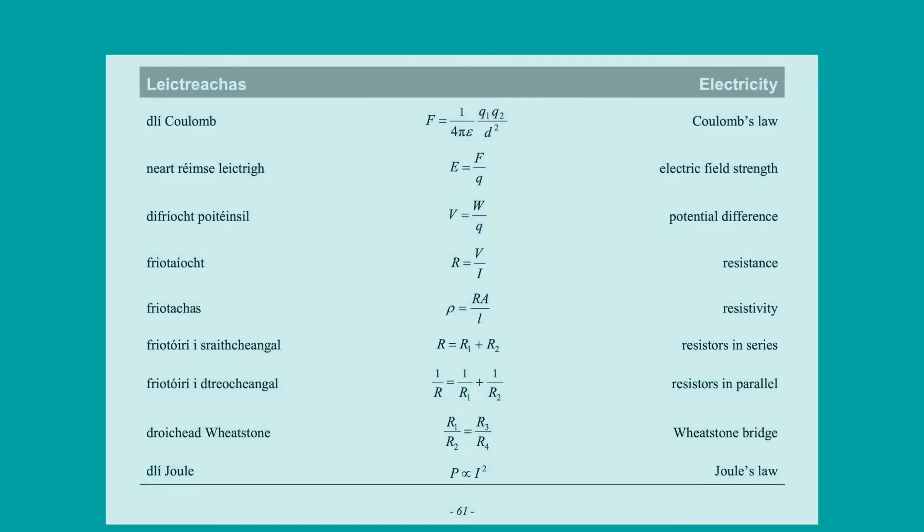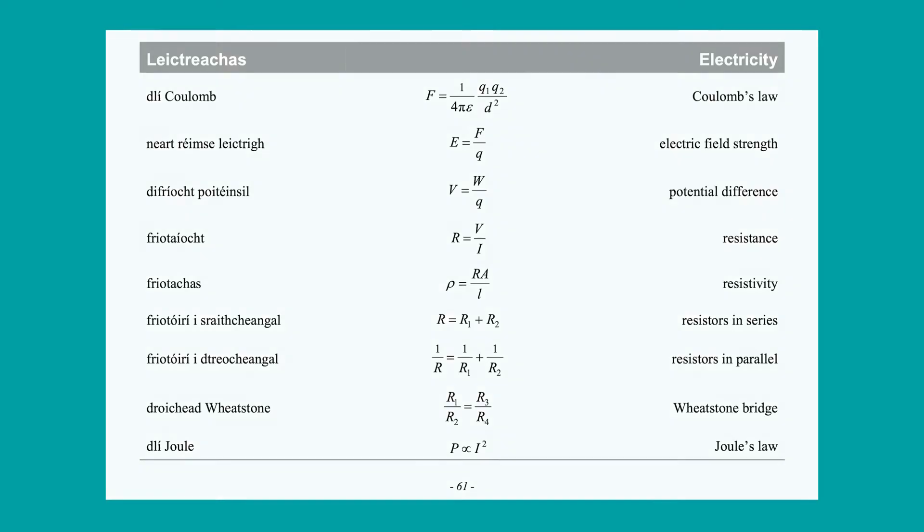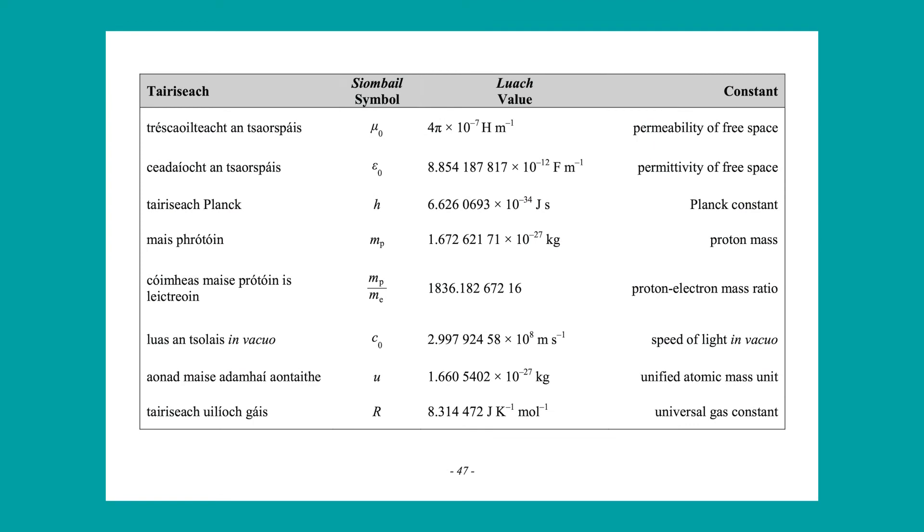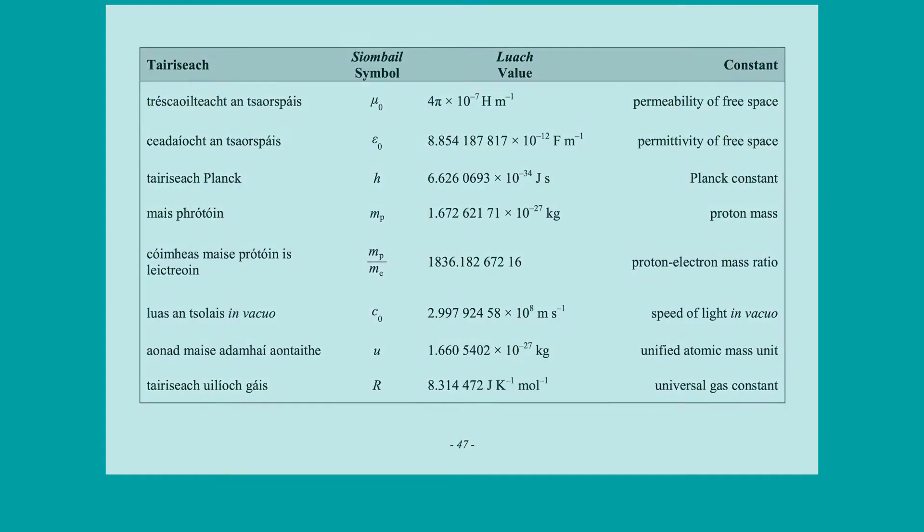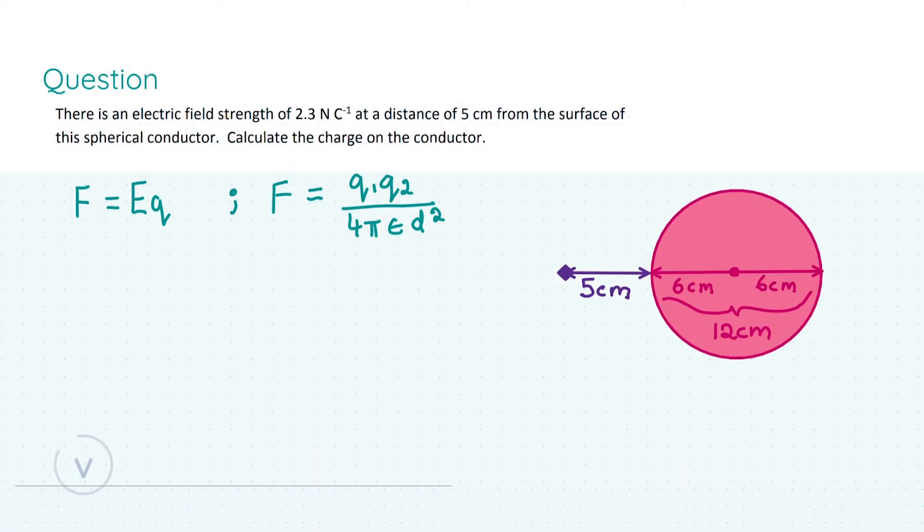Moving on to the next section of our question, which is the calculations question, I do need to draw your attention to a couple of pages in the Forman Tables book. The first one being where we're going to be looking at Coulomb's law and the electric field strength formula, and next we're going to need page 47, where we will be using the permittivity of free space constant in our calculation. Looking at the question, we are told that there is an electric field strength of 2.3 newtons per Coulomb at a distance of 5 centimeters from the surface of the spherical conductor. Note that it is just from the surface, as you can see in the diagram I've drawn here.